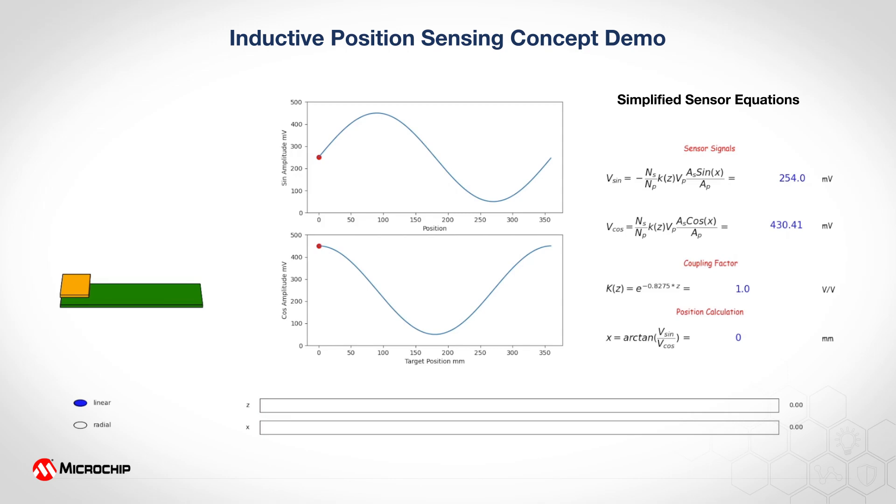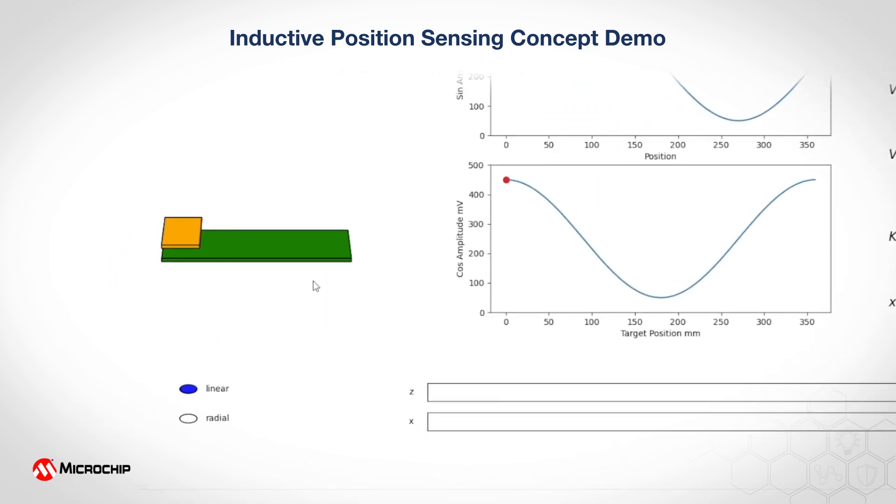This demo aims to showcase inductive position sensing concept in a very easy to understand and animated fashion. On the left-hand side here we'll be able to see a 3D representation of the inductive sensor which is basically a PCB on the bottom and a metal target on top, and the geometric midpoint of this metal target is the position that we're sensing.